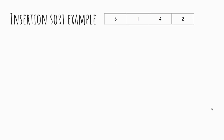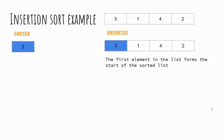Using the same list we've used for all of the sorting algorithms — three, one, four, and two — as our unsorted list. We start with our unsorted list on the right, and the first element forms the start of our sorted list. So at this point the sorted list has one element, which is just the number three.